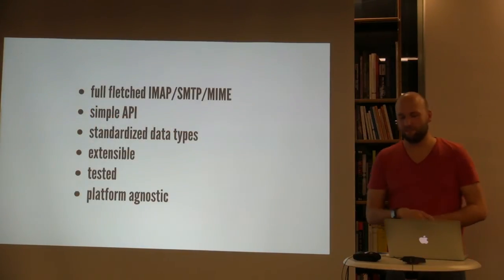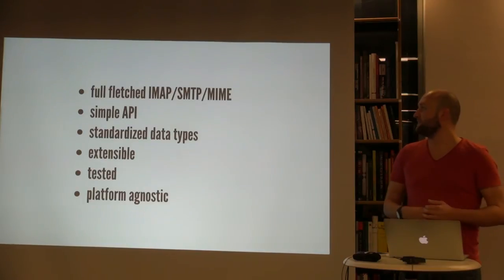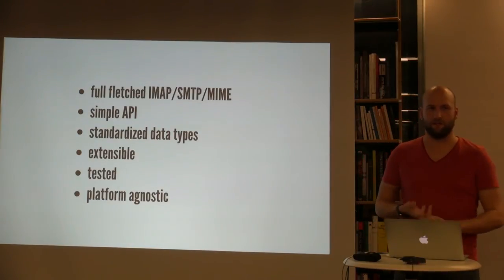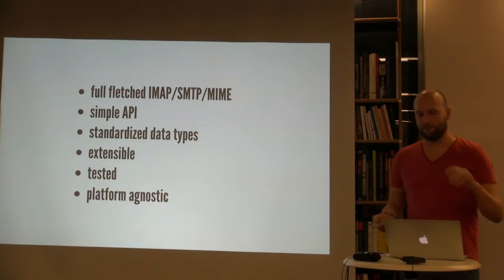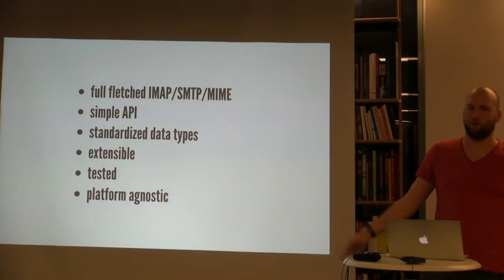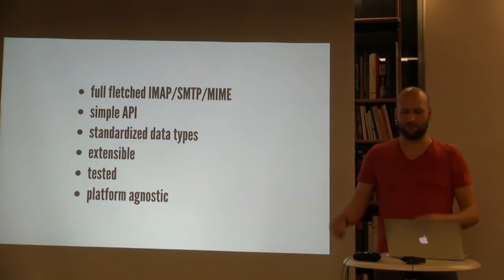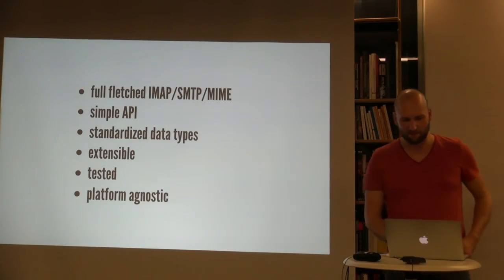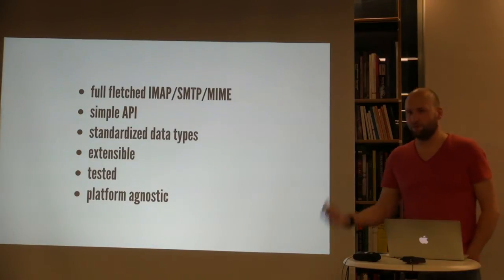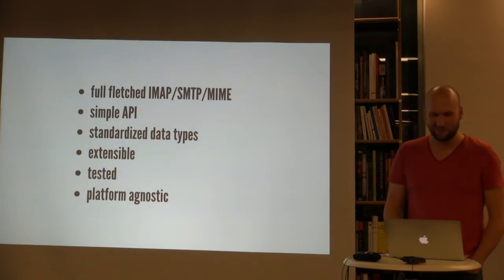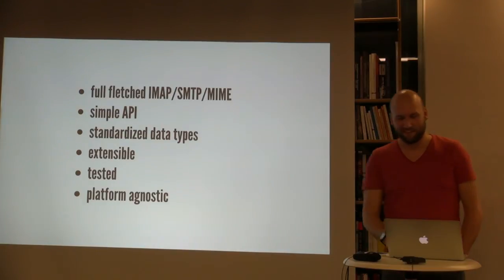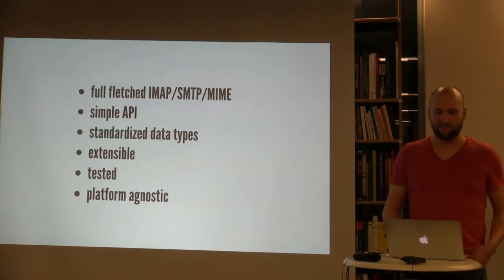What email.js ultimately should be is a full-fledged collection of libraries to handle IMAP, raw SMTP, and all the issues around MIME parsing. It should have a simple API, standardized data types — moving away from Node streams, Node buffers, and whatnot, and just using strings, typed arrays, and the stuff that everybody else uses. It should be standard-adherent, extensible, well-tested, and under CI from the start.